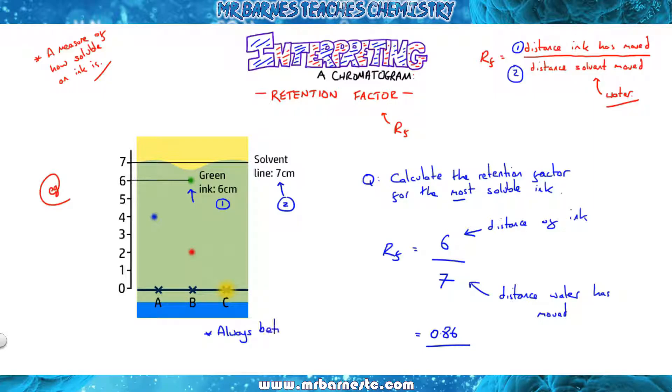Now the key thing here is it's always between zero and one. So if you get an answer that's above one, you've done it wrong, you've divided it the wrong way round, so change it.